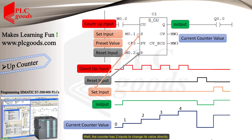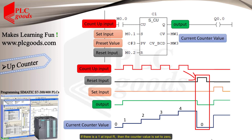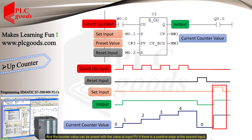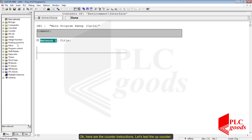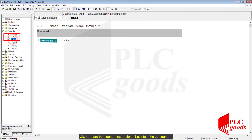The counter has two inputs to change its value directly. If there is a one at input R, then the counter value is set to zero. The counter value can also be preset with the value at input PV if there is a positive edge at the second input. Here are the counter instructions — let's test the up counter first.